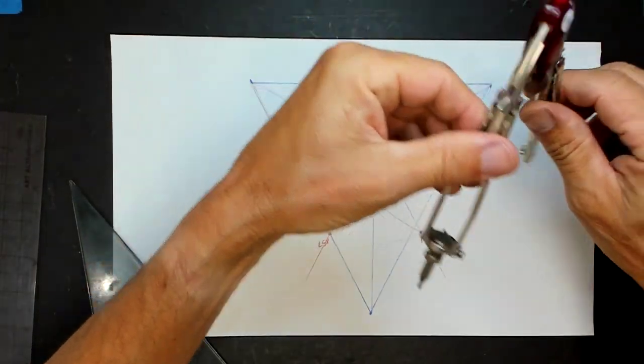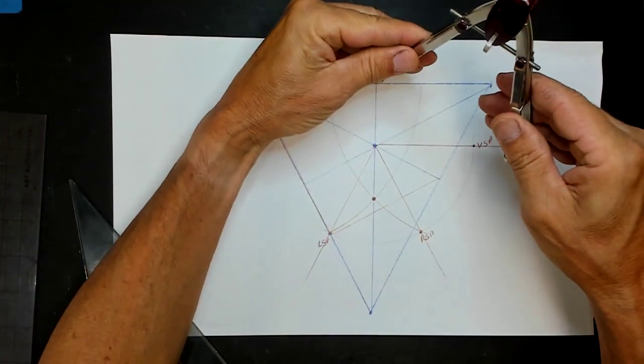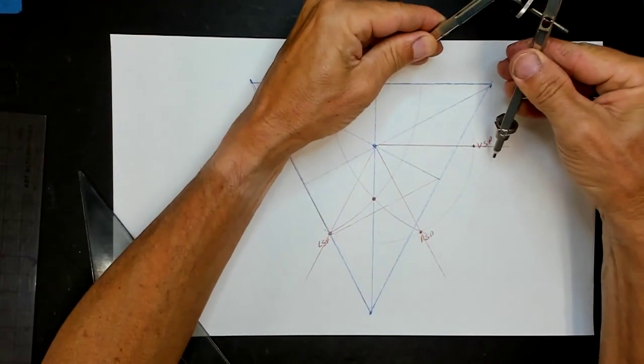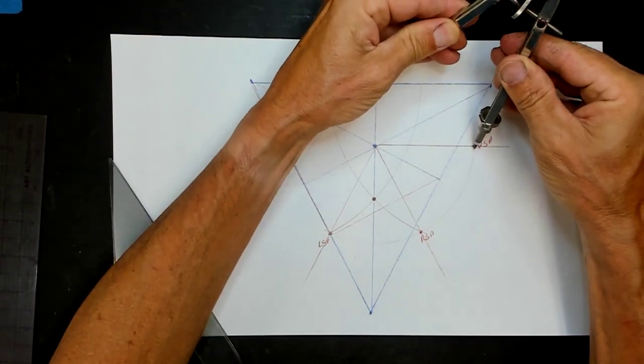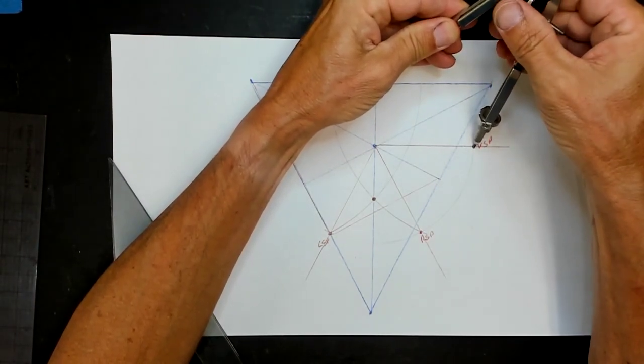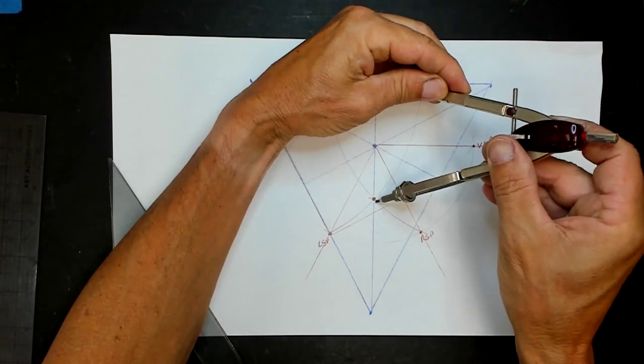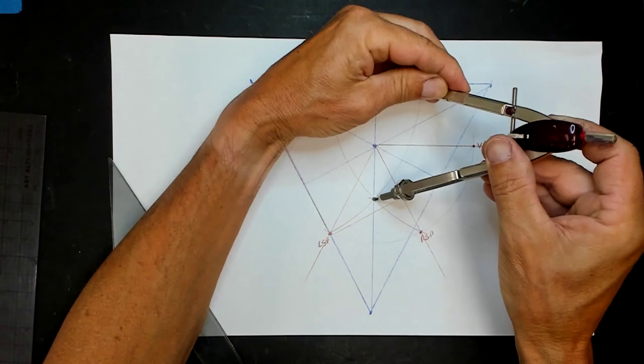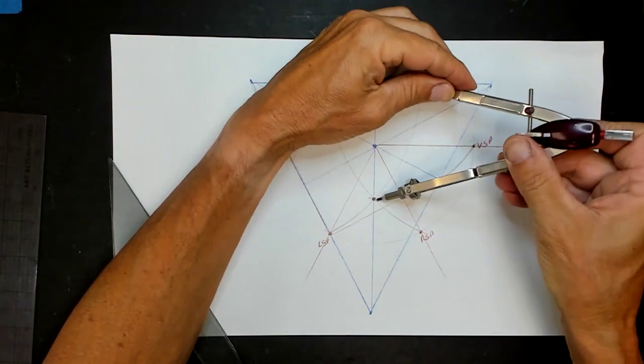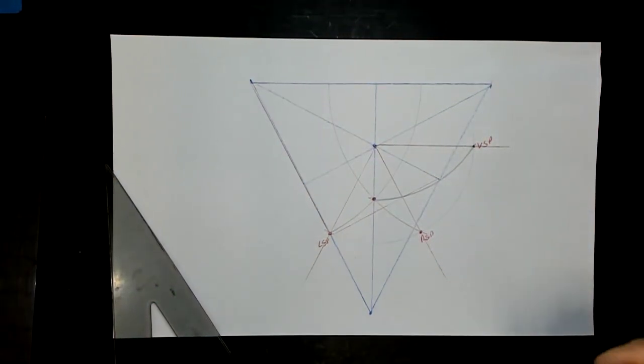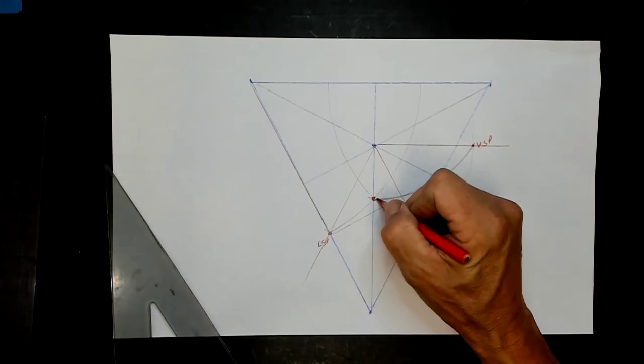We used this method. We took this distance and swung that over. Whoops, slipped. And you get the same dot. It's like magic.